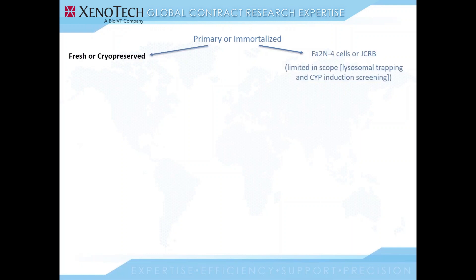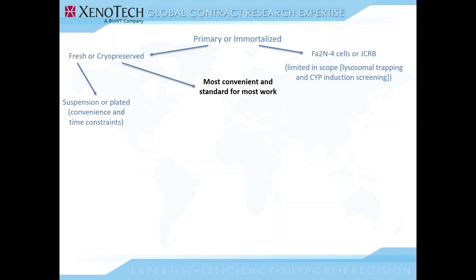If you choose primary hepatocytes, you can choose from freshly isolated cells or cryopreserved cells. Freshly isolated cells can be used in suspension or plated format, animal or human, but they have to be used right away and experiments have to be ready to go when the cells come in. If you choose cryopreserved cells, you have the convenience to use them when it's best for you in your lab, and you can choose lots based on characterization assays that aren't always known at the time you have to place your order for fresh cells. They have also been an accepted test system for quite some time.